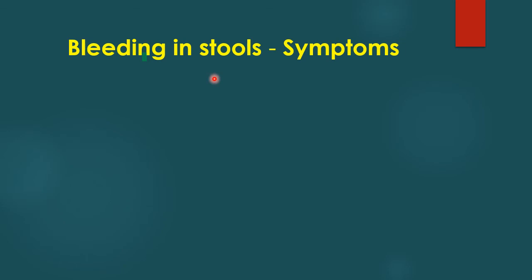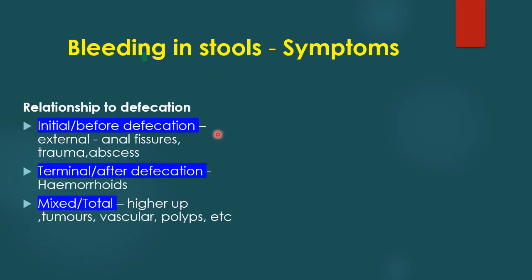The main symptom of lower GI bleed is passing blood in the stools. You must differentiate the relationship of bleeding to defecation. It can be initial — before defecation — usually from external causes like anal fissures or trauma. It can be terminal — after defecation — which is classical of hemorrhoids. Most commonly it is mixed with stools, indicating causes higher up such as the sigmoid or descending colon, usually due to tumours, vascular malformations, and polyps.